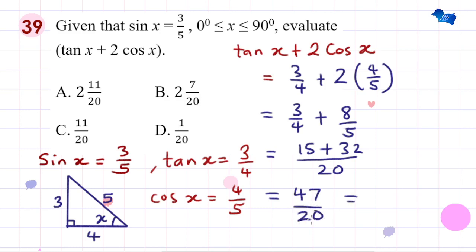Changing this to a mixed number, 20 will go into 47 two times remaining 7, which 20 will still share. So the answer is 2 whole numbers 7 over 20.